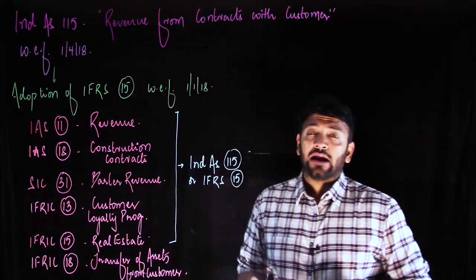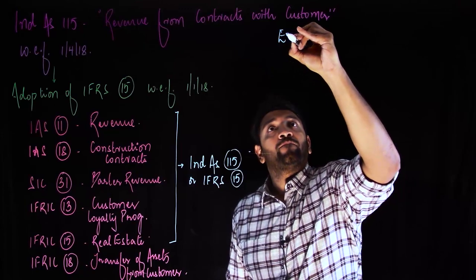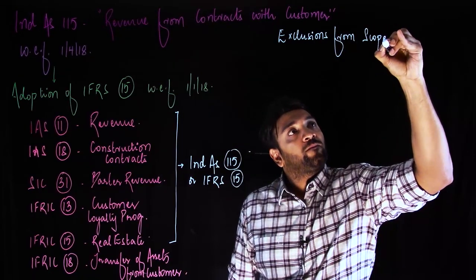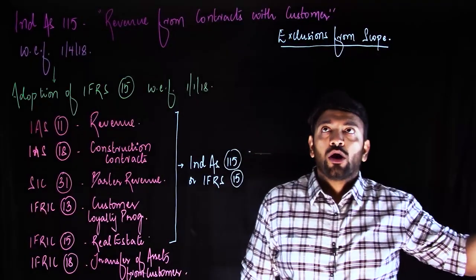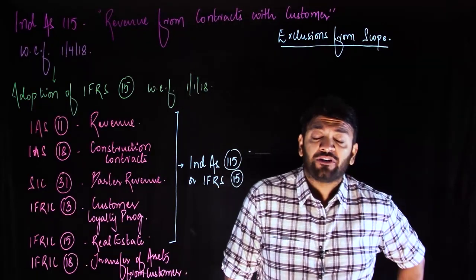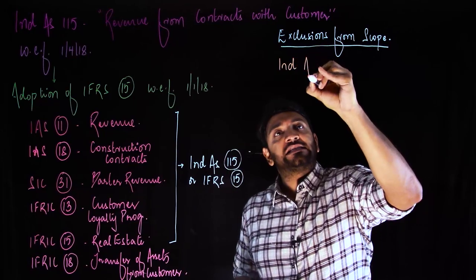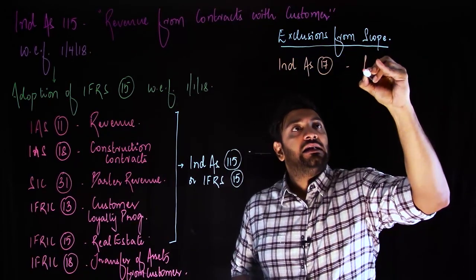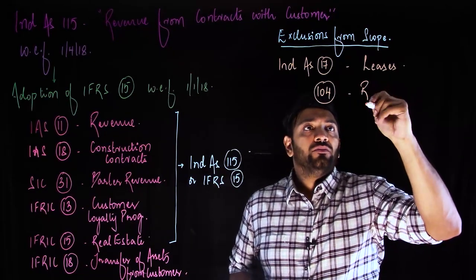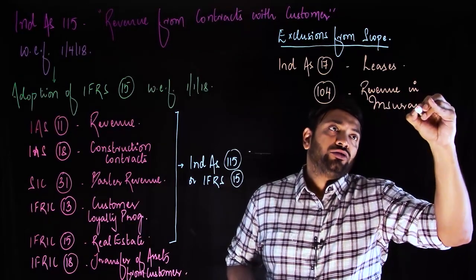Now we must look at the exclusions from the scope of Ind AS 115. Certain standards deal specifically with certain types of revenue not covered under Ind AS 115. One such standard is Ind AS 17, which deals with leases. Another is Ind AS 104, which deals with revenue from insurance contracts — a completely separate ambit.